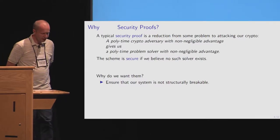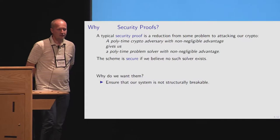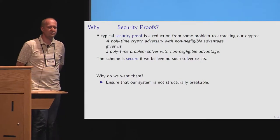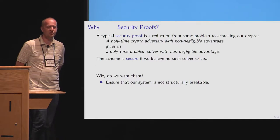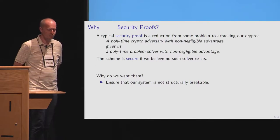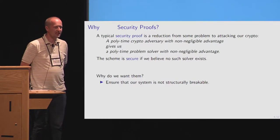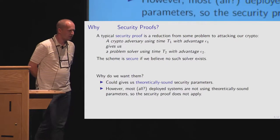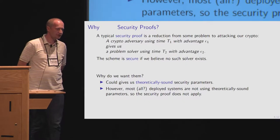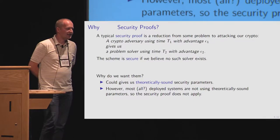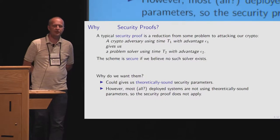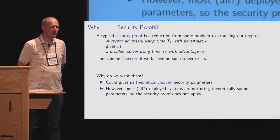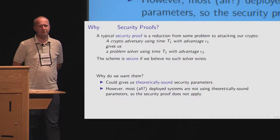Why do we have security proofs? The traditional form where you have a polynomial-time adversary gives a polynomial-time solver — this ensures that your system is not structurally breakable; there is no easy way to break your system that avoids the hard problem underlying it. But it doesn't really help with the one interesting problem: what should I use as a security parameter? Concrete security allows us to say something about which security parameters to use, where you specify an adversary with time t1. Unfortunately, a lot of our schemes aren't really tight, so t2 tends to be a lot smaller than t1.